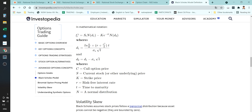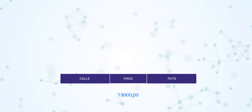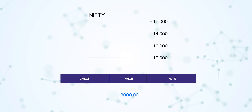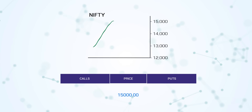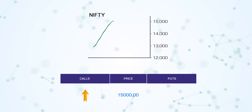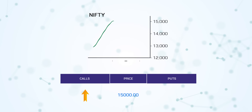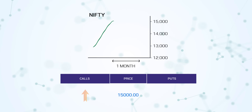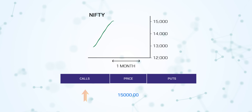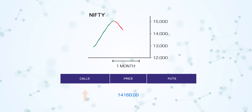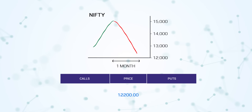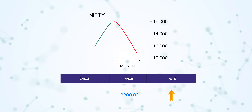Let us make it very simple. During the next one month, if there is some expected positive news, the general expectation is that the market will shoot up, and accordingly the option prices will increase. Or if there is going to be some negative news, the market is expected to fall and then option premium will increase on the put side.